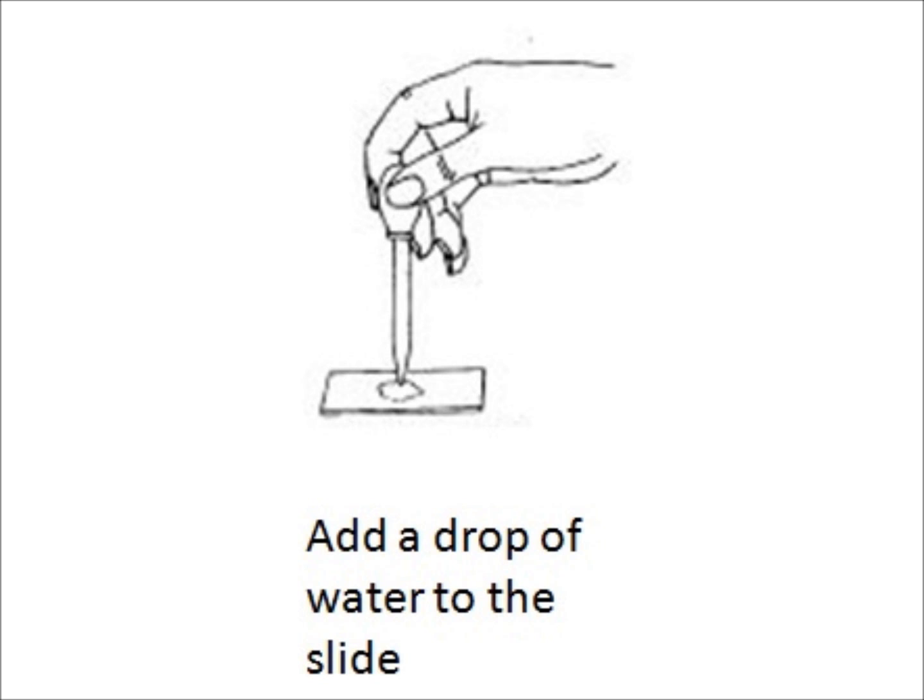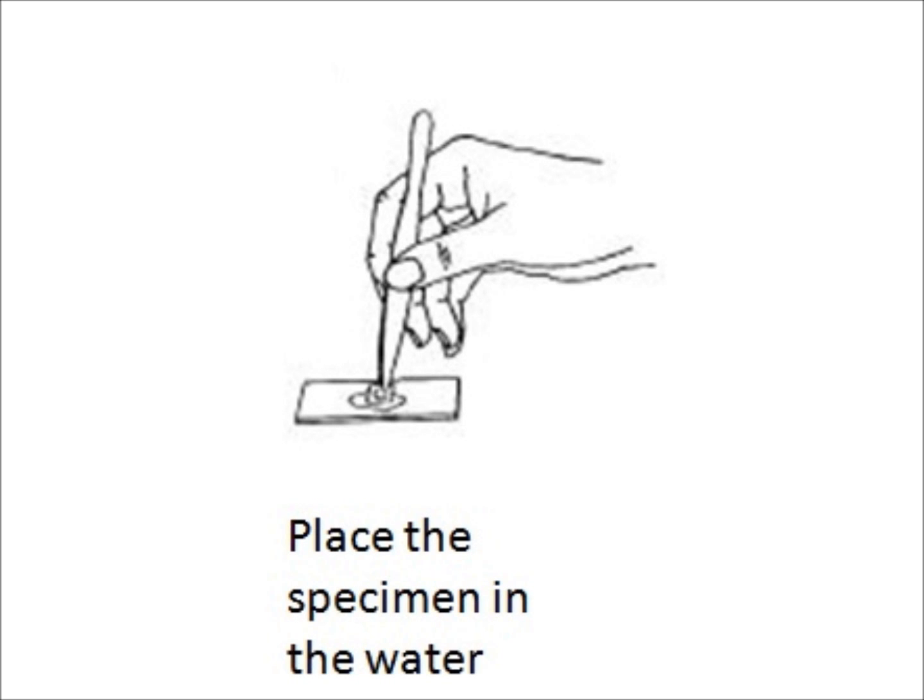In order to make a wet mount, you need to put a small drop of water onto the slide and then just place your specimen in the water. In the case of the rhizopus, it's worth probably just teasing the specimen apart a bit so that the spores are well separated.